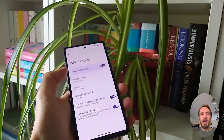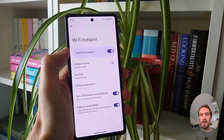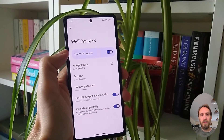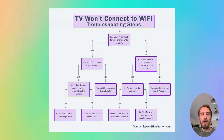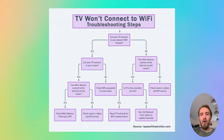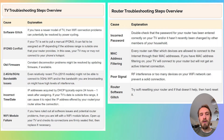If your TV connects to your phone hotspot and can access the internet — assuming you have mobile data switched on — then you have a problem with your router, not your TV. If your TV will not connect to your phone hotspot, then you either have a software issue with your TV or a hardware problem with the Wi-Fi card.